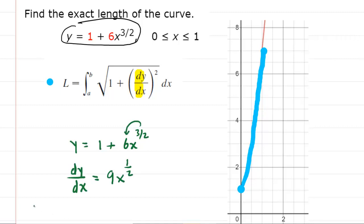Now we can begin to plug it into the arc length formula. The arc length equals the integral from our lower x value of zero to our upper x value of one. Then we have the expression one plus nine x to the half. Don't forget that dy/dx is going to be squared according to the arc length formula, and we do this with respect to x.